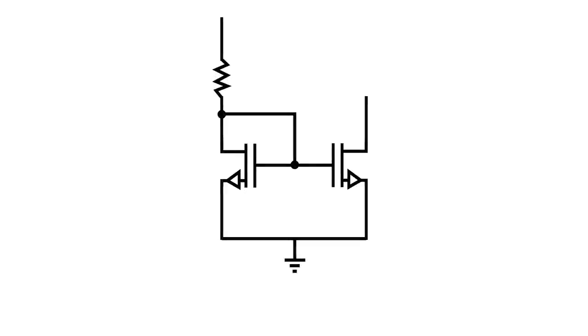Of course, for a current mirror to function, it needs a reference current. This is set by attaching an appropriate sized resistor to the collector or drain of the reference transistor.